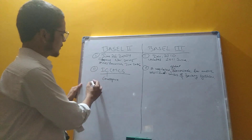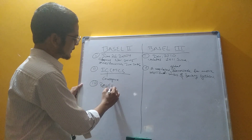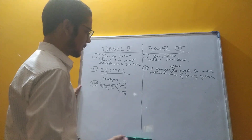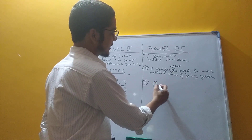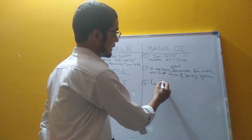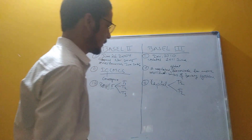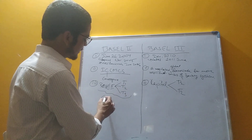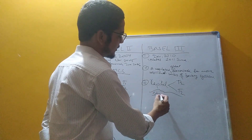Another difference is capital structure. Basel 2 has three capital tiers: Tier 1 Capital, Tier 2 Capital, and Tier 3 Capital. Basel 3 decentralized and refined this capital definition.